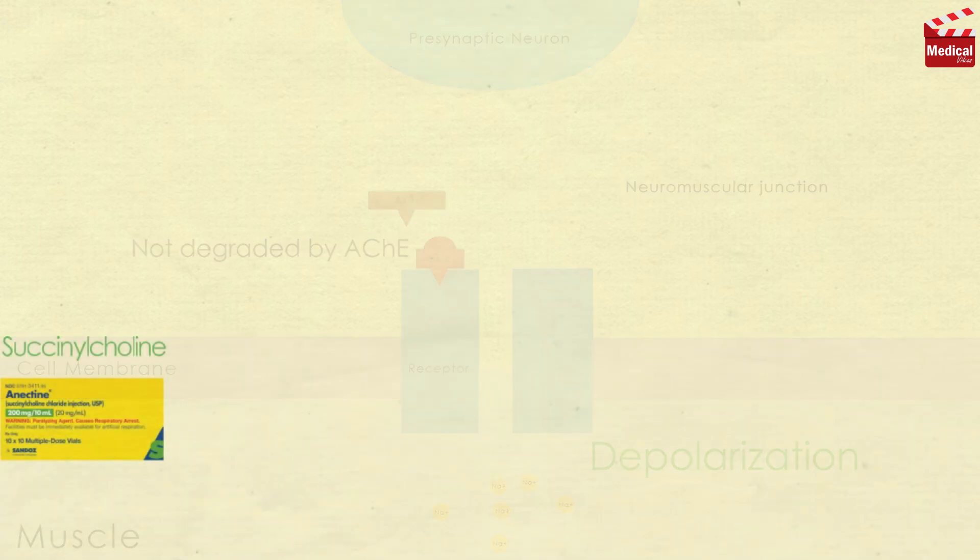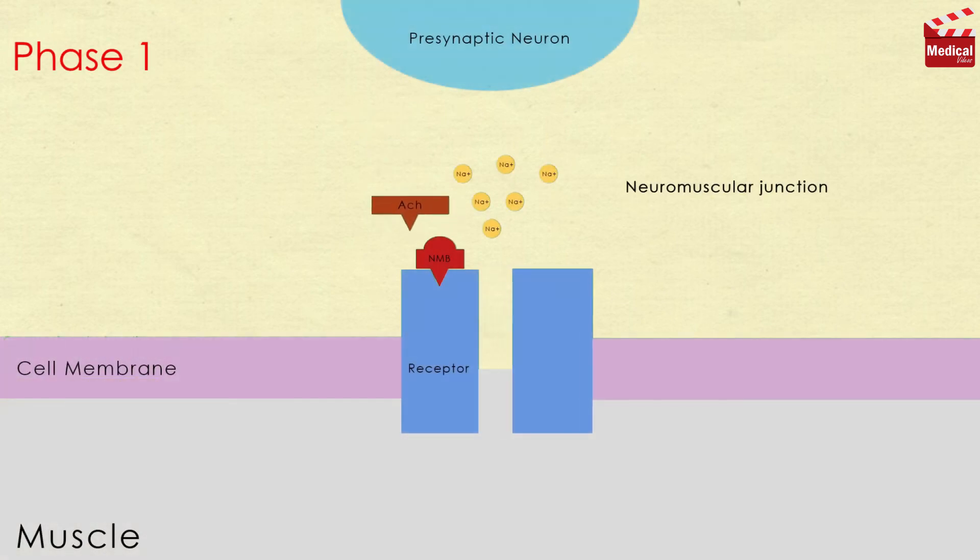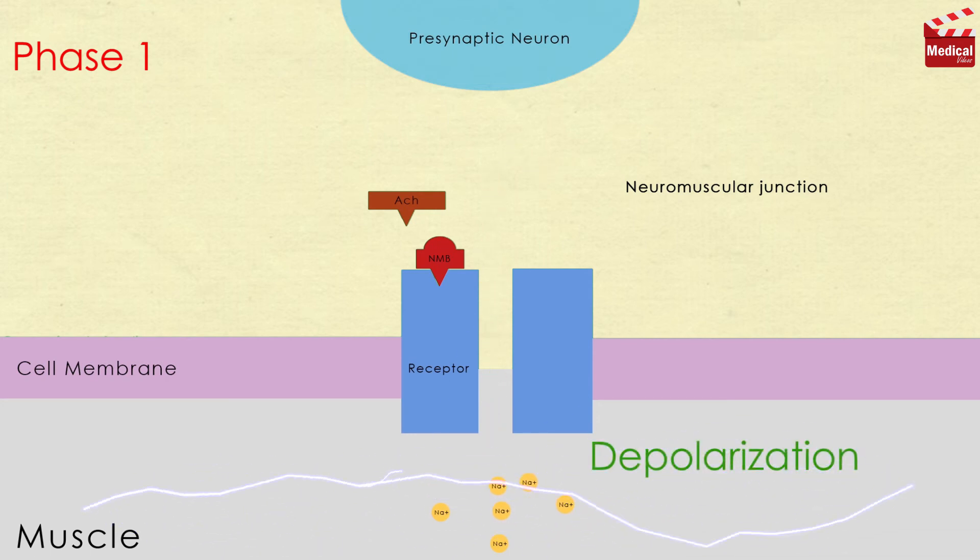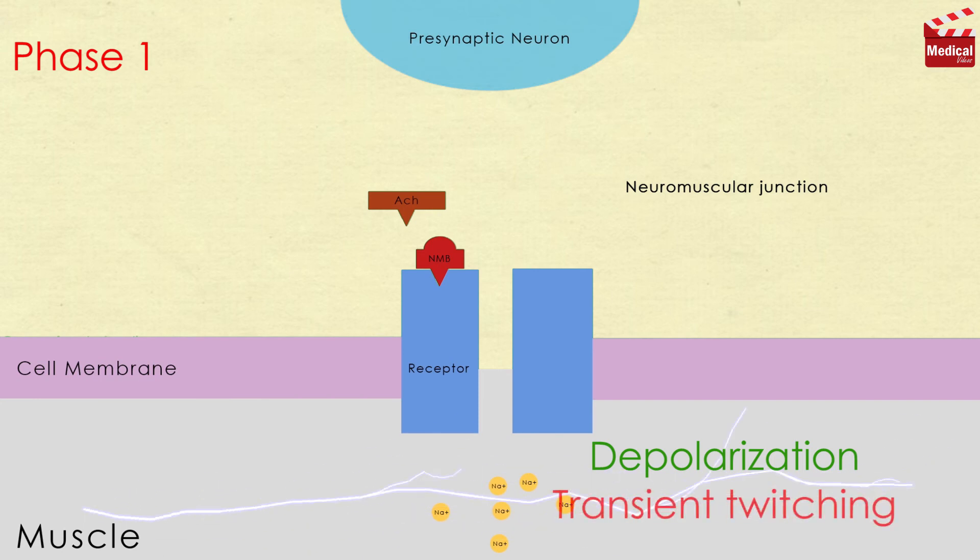Phase one: The depolarizing agent first causes the opening of the sodium channel associated with the nicotinic receptors, which results in depolarization of the receptor. This leads to a transient twitching of the muscle.